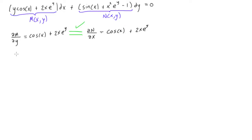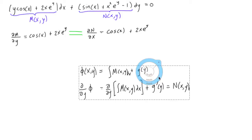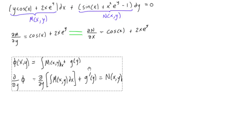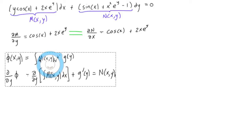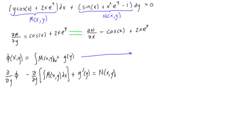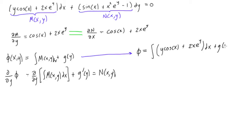So the way that we solve this, we need our solution φ of x and y. Remember from the last video, we had this method for solving exact differential equations — we could also do the opposite and replace all the M's with N's. Here, let's use this method. So φ equals the integral of our function M, which is y cos x plus 2x e to the y, dx, plus some function g of y that we don't know yet.